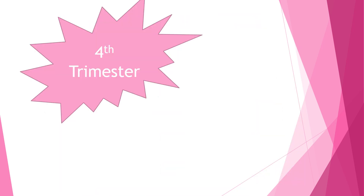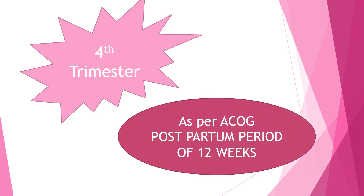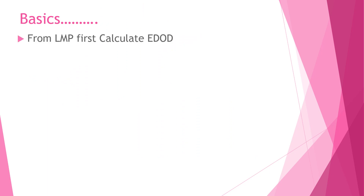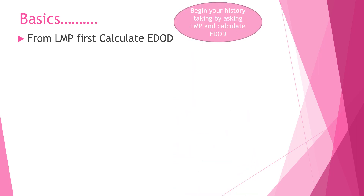There is also the fourth trimester, which is actually the first 12 weeks of the postpartum period. Now let's begin with some calculations. When calculating the EDOD from the LMP — LMP is last menstrual period and EDOD is expected date of delivery — before taking history you need to know the LMP and EDOD. For example, we have an LMP of 6th June 2021.